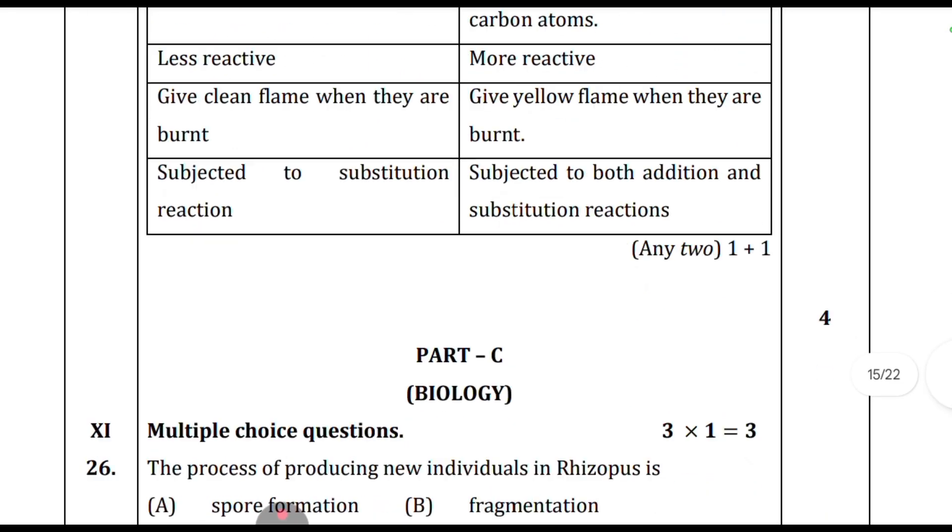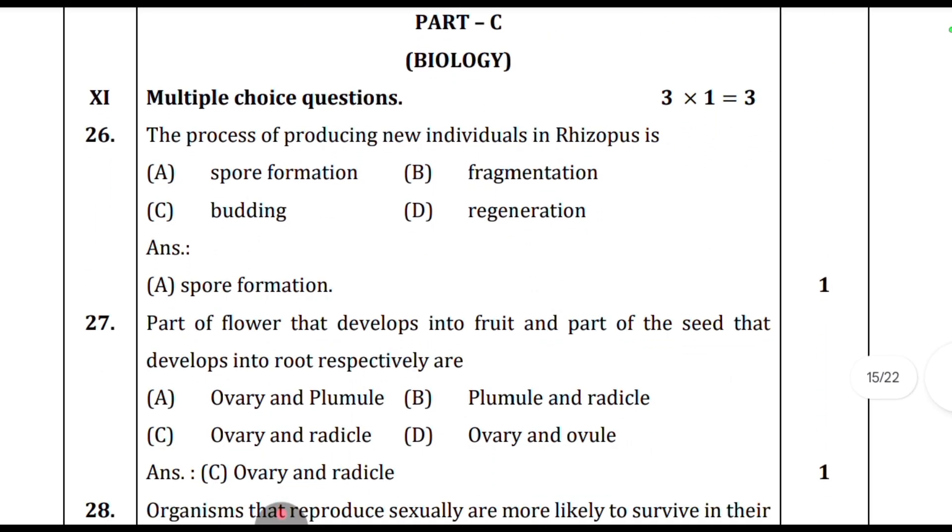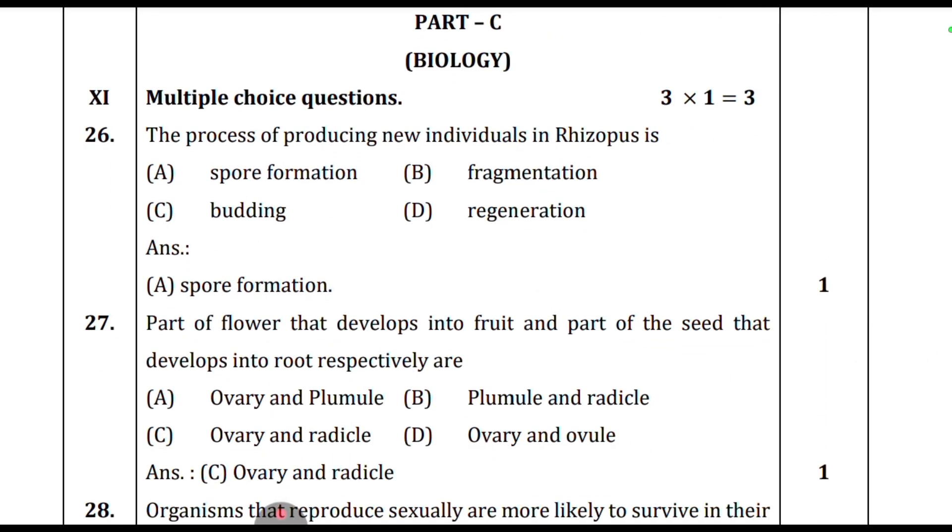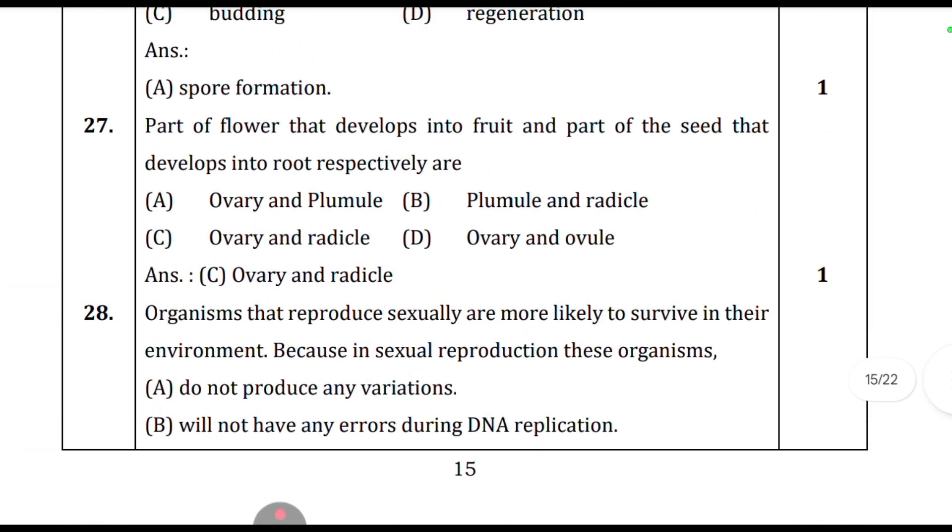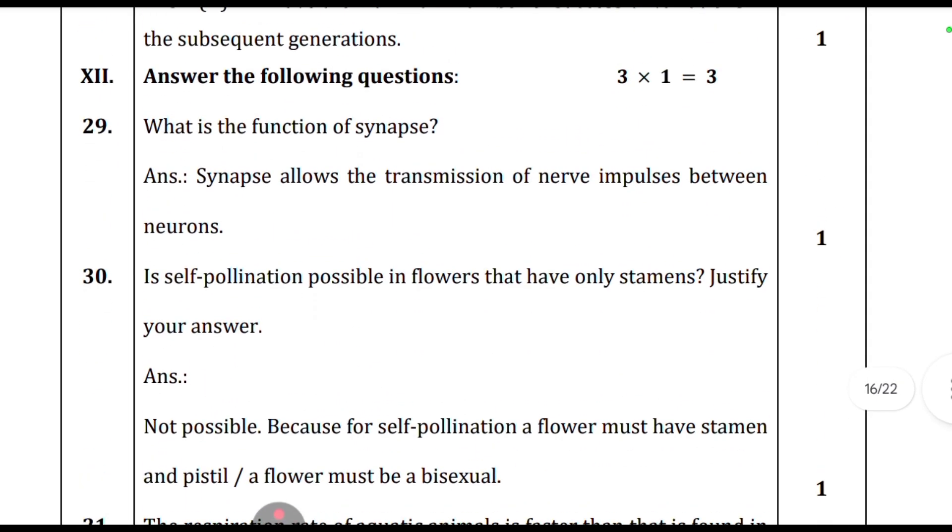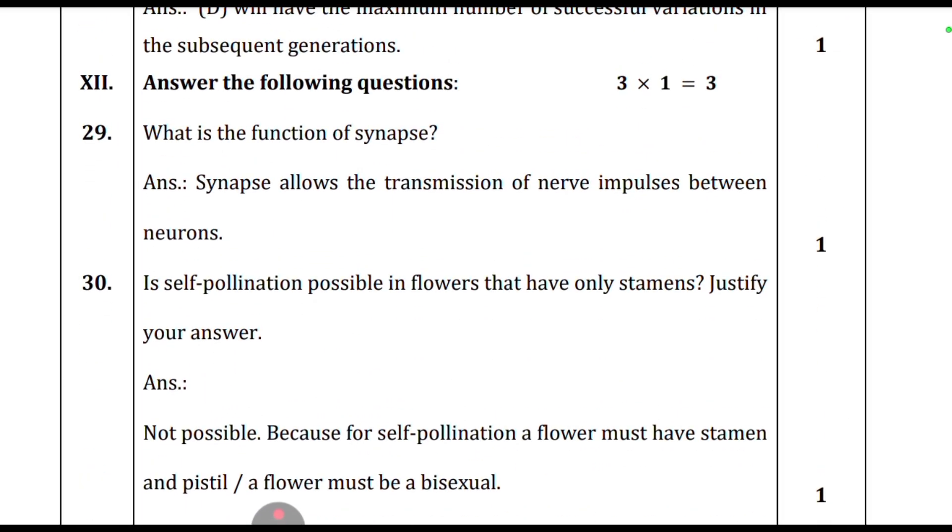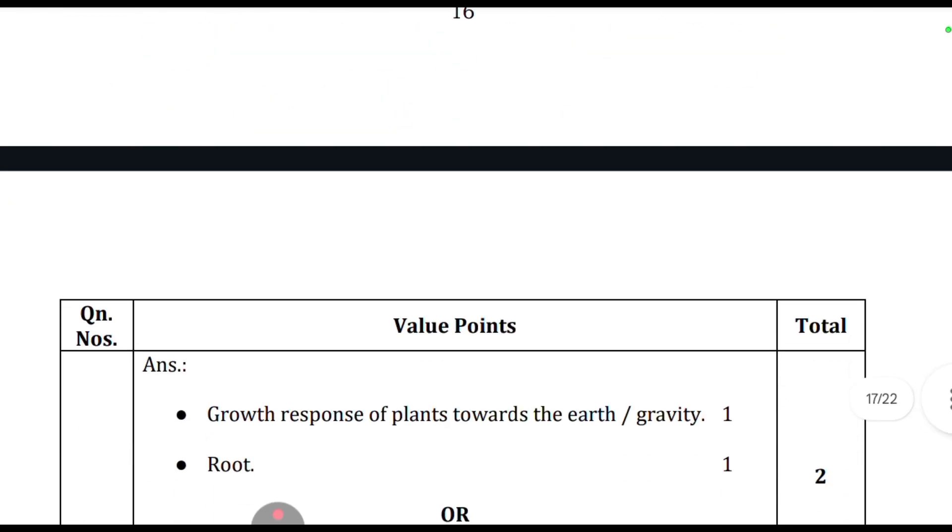This is an important question. For drawing the diagram you get two marks, and labeling two points gets one mark, half marks for each point. This is the biology section of the fourth model question paper. The process of producing new individuals in organisms is spore formation. These are multiple choice questions. What is the function of synapse? Synapse allows the transmission of nerve impulses.